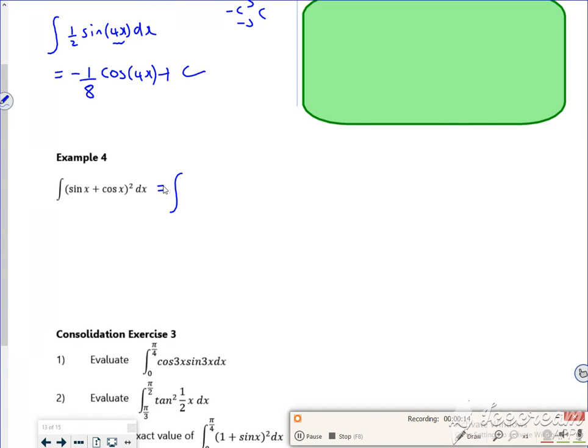So if I square it, I've got sine squared, 2 sine x cos x, which nicely looks like sine 2x. So what have we got? I've got sine squared plus cos squared is 1.